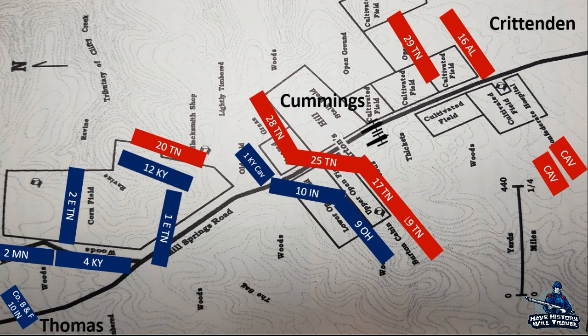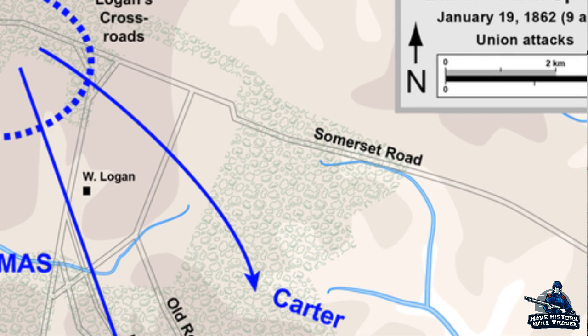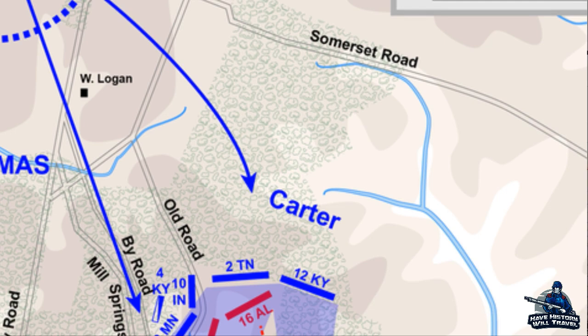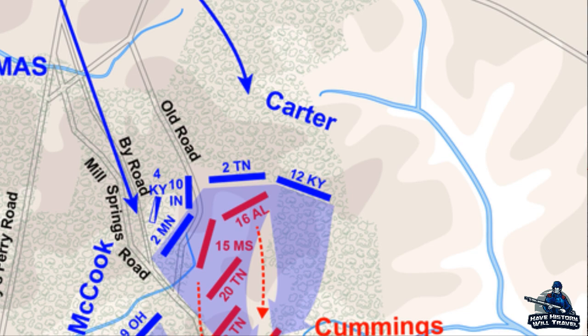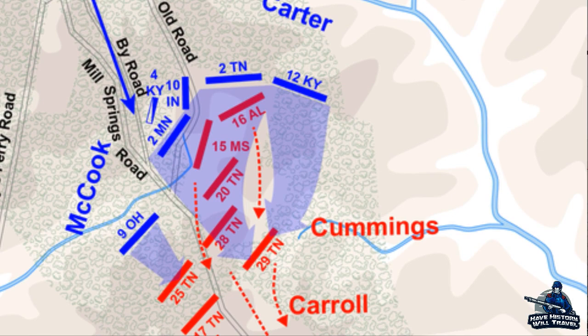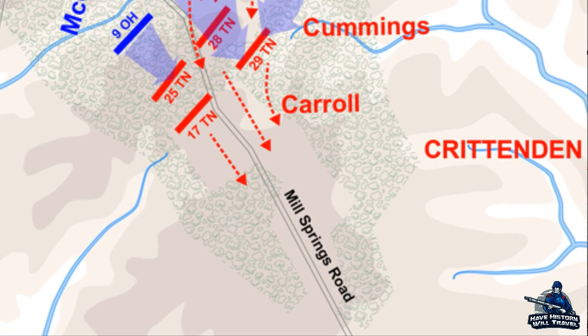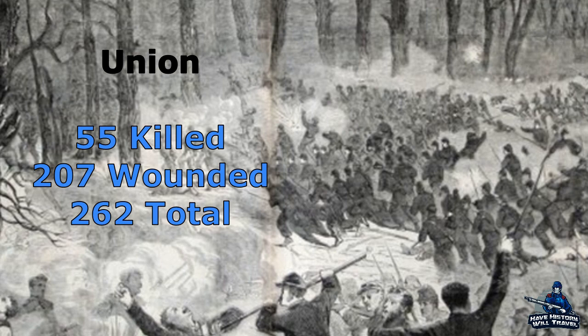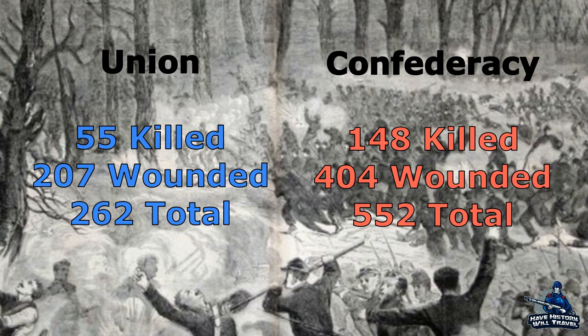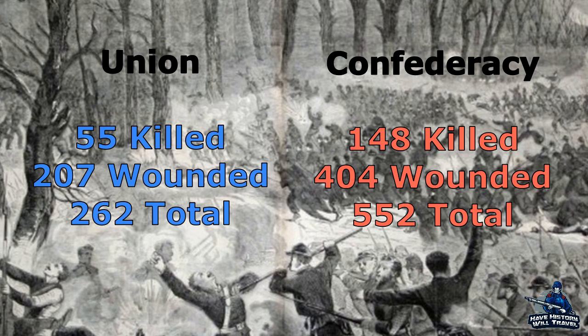Eventually, those Tennesseans could take no more and fell back at a rapid pace. The 9th Ohio shifted their rightmost companies to flank the demoralized rebels and drove them from the field. Thomas' troops did not stop there. They pursued the retreating enemy all the way to their encampment, where the little resistance did nothing to stop the victorious blue troops. The rebels retreated all the way to Tennessee. With one battle, the Union had eliminated the largest Confederate threat in the eastern portion of Kentucky and allowed for them to concentrate their forces against Albert Sidney Johnston and Middle Tennessee. The Union lost 55 men killed and 207 wounded, totaling 262 casualties. The Confederacy lost 148 men killed and 404 wounded, totaling 552 troops. Both sides lost a combined 814 soldiers.